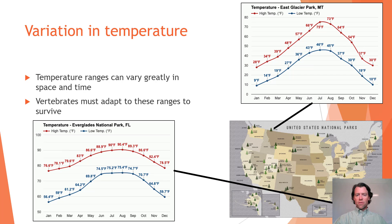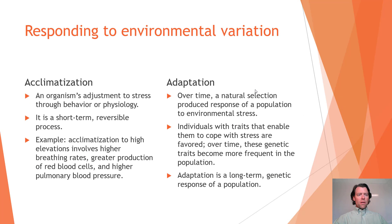Across time, temperatures differ. The same can be true for the Everglades, and temperature differences between Glacier and the Everglades are quite different — the low temperature in January for the Everglades is about 56°F, whereas it was 9°F in Glacier. Two other key terms dealing with vertebrates responding to environmental variation are acclimatization and adaptation.